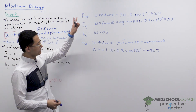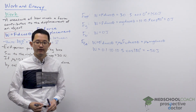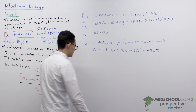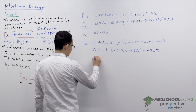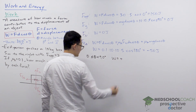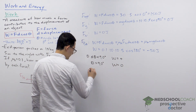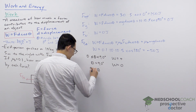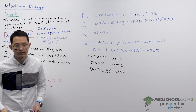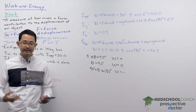We've now found the work done by each force. Importantly, the angle between force and displacement determines the sign of work: if theta is between 0 and 90 degrees, work is positive; if theta equals 90 degrees, the force does no work; and if theta is between 90 and 180 degrees, the force does negative work. In the next video, we'll look at how work can impact the energy of an object.